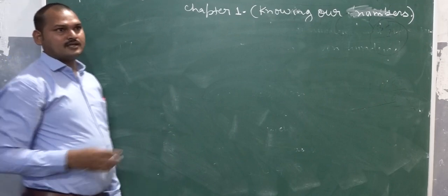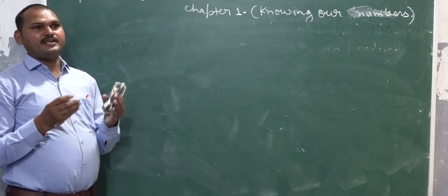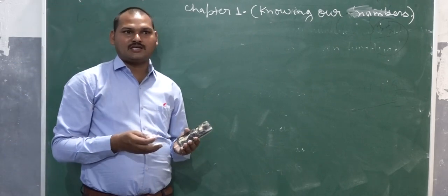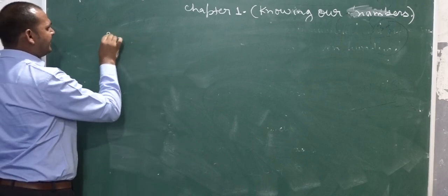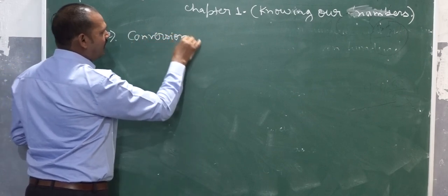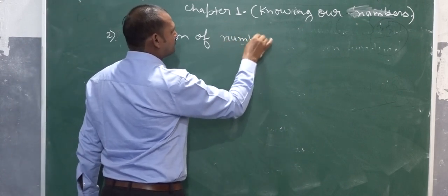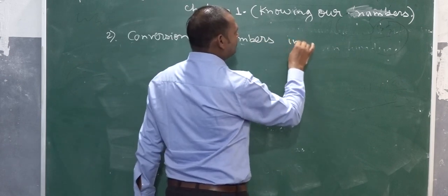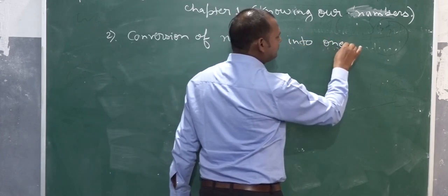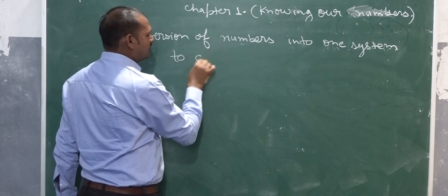The next topic is conversion of numbers from the Indian system into the international system — meaning how many million is equal to how many thousand, or how many million. The second topic is conversion of numbers from one system to another.